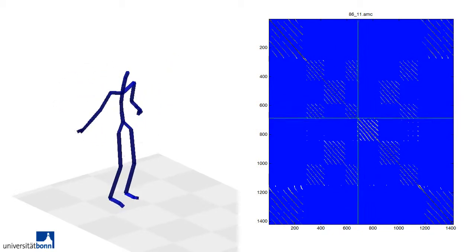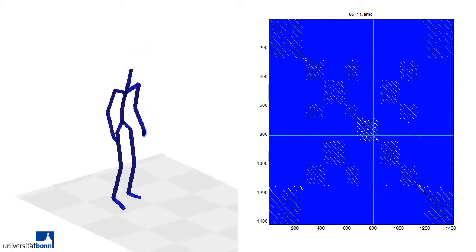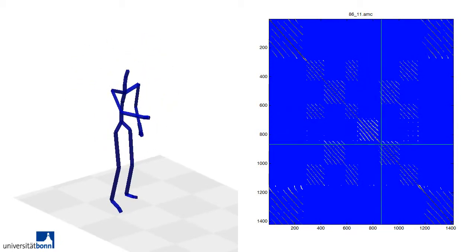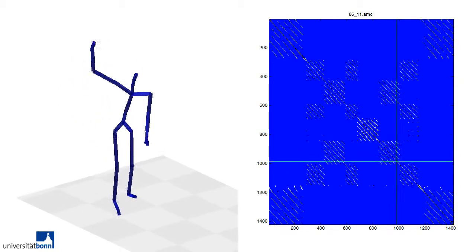Our first example from the CMU database contains various instances of rotating the arms and also some walking. Note how the diagonal patterns in the matrix form distinct blocks.